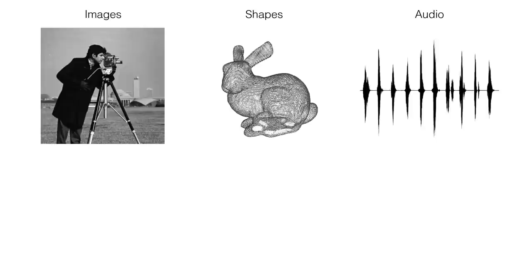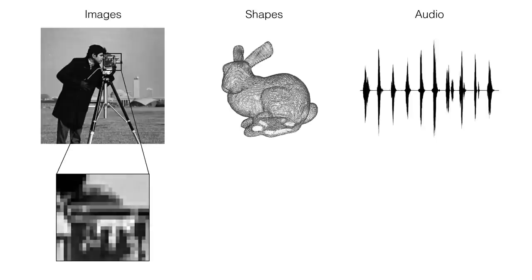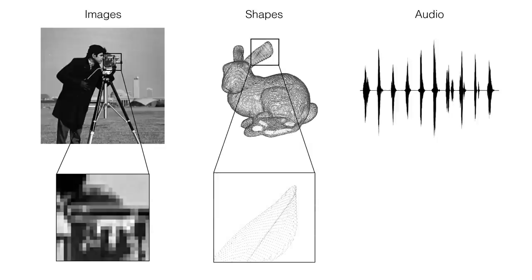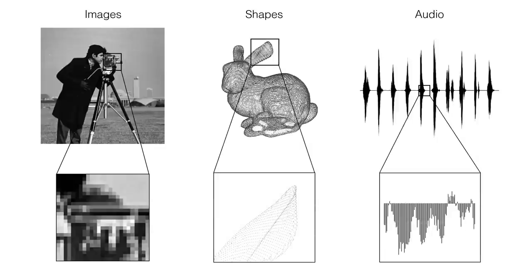Traditionally, discrete representations for signals are used. For instance, grids of pixels for images, point clouds for representing 3D shapes, or discrete samples for the amplitude of a sound wave.